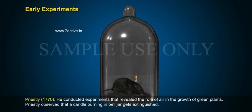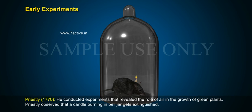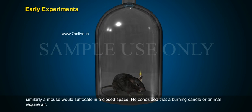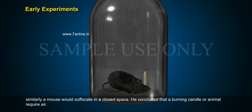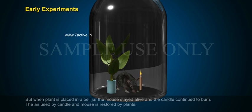Early Experiments. Priestley, 1770: He conducted experiments that revealed the role of air in the growth of green plants. Priestley observed that a candle burning in a bell jar gets extinguished. Similarly, a mouse would suffocate in a closed space. He concluded that a burning candle or animal requires air.